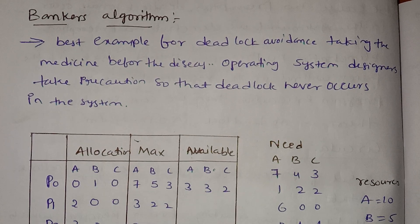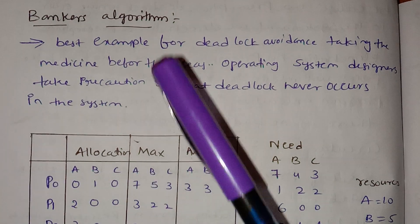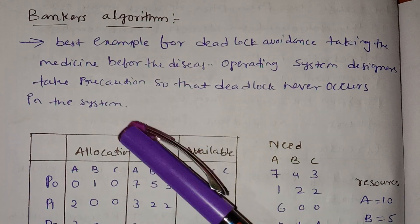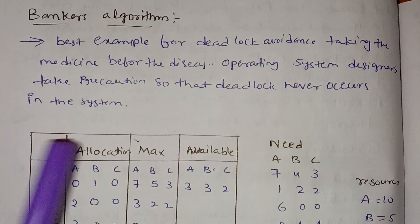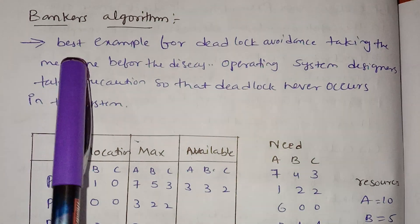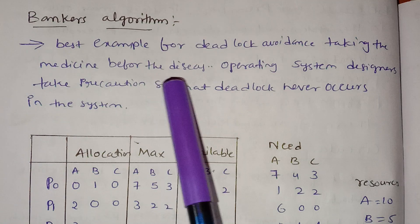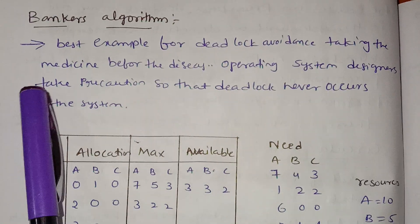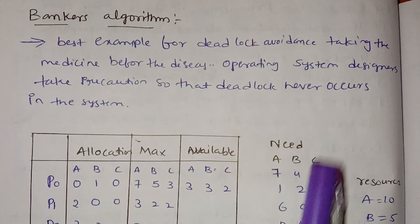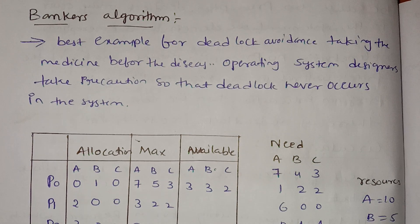Now let's look at the Banker's Algorithm. First, let's check the Banker's Algorithm and look at deadlock avoidance. The best example for deadlock avoidance is taking medicine before diseases — operating system designers take precautions so that deadlock never occurs in the system.